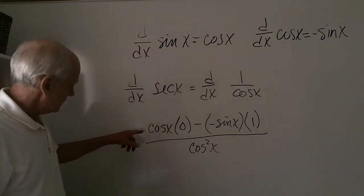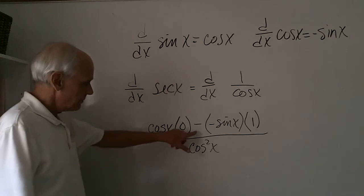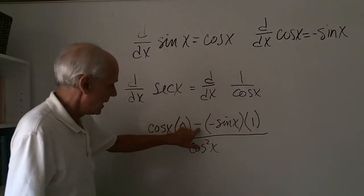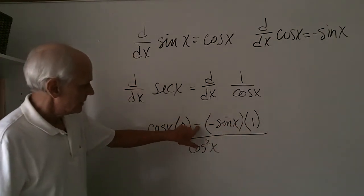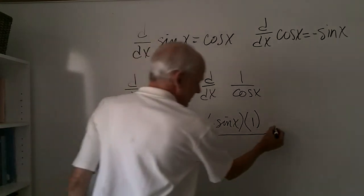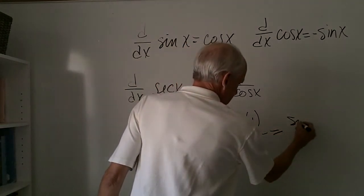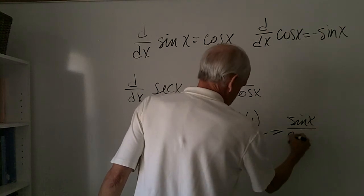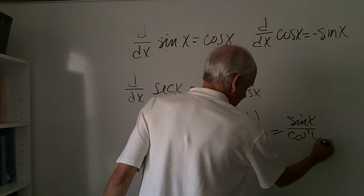Now let's take a look. Anything times zero is zero. Over here I have negative sine x, but this negative distributed through is going to make it positive, so I'm going to have sine x over cosine squared x,